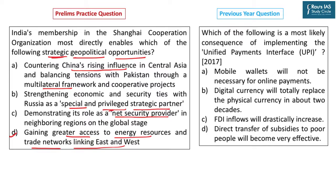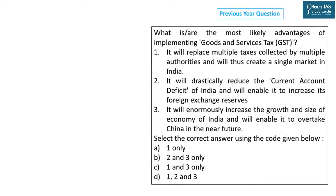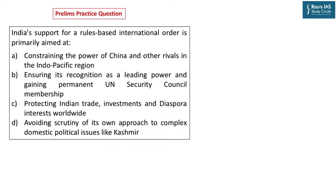UPSC keeps asking about the most likely consequence of major initiatives by India. For instance, in 2017, UPSC asked about the most likely consequence of implementing UPI. UPSC has also asked about the most likely advantages of implementing GST — that is, to replace multiple taxes collected by multiple authorities. In the context of India joining the SCO and other regional groupings, let's take another important analytical question.